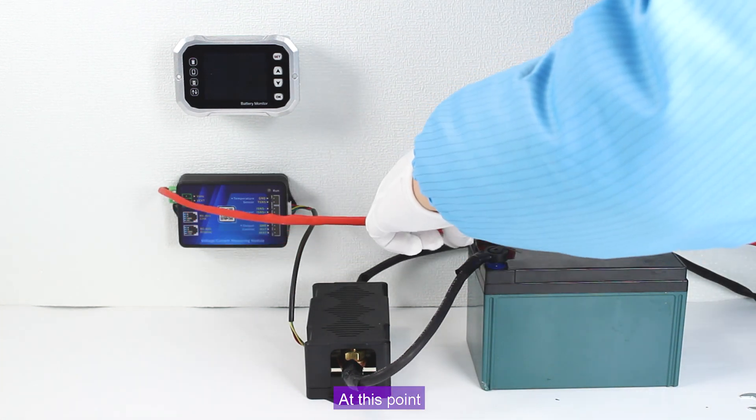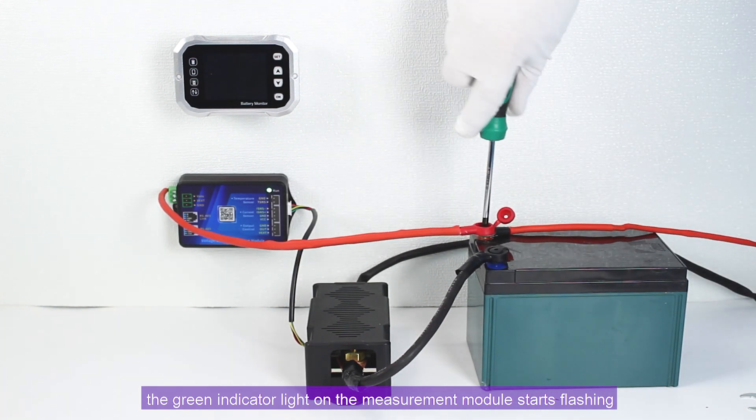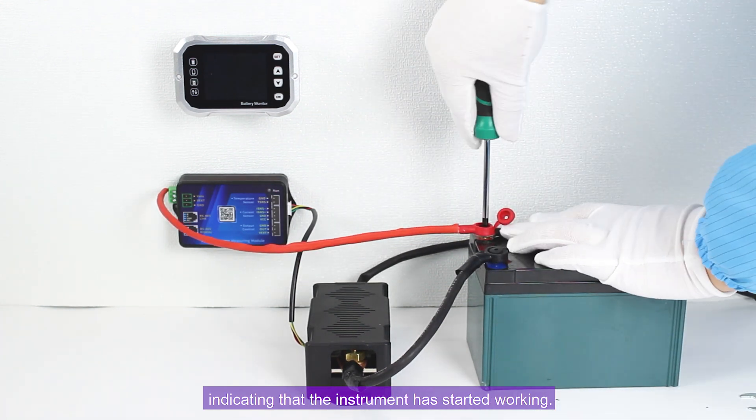At this point, the green indicator light on the measurement module starts flashing, indicating that the instrument has started working.